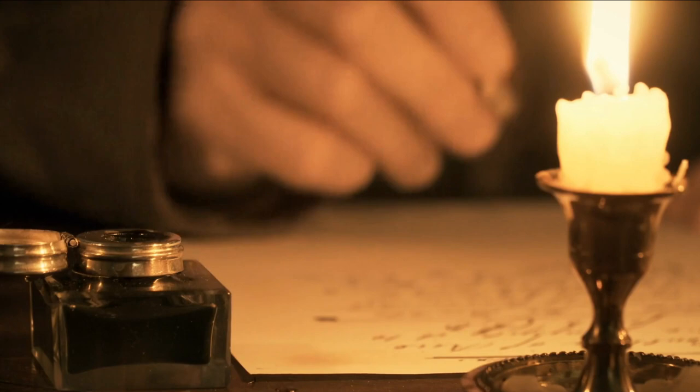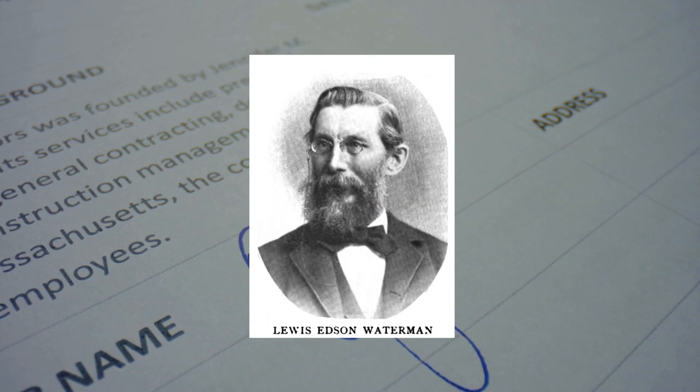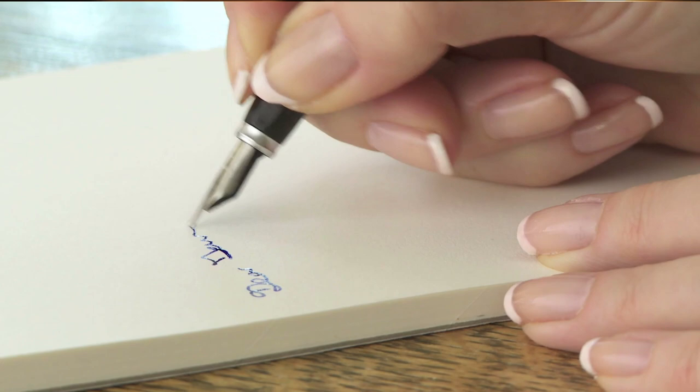Fast forward to the 19th century, and the invention of the fountain pen changed the game. The fountain pen was invented by a man named L.E. Waterman, and it was revolutionary because it allowed people to write without having to dip the pen in ink every time they needed to write. This made writing much more efficient, and the fountain pen quickly became a popular writing tool.